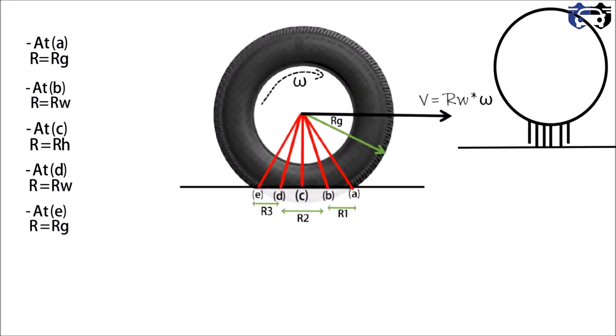For understanding, the tire tread is shown as bristles in the figure. The tail of the tread is on the tire and the head of the tread is on the ground. The tail moves with the velocity of the tire and the head moves with the tangential velocity. When there is a difference between the velocity of the head and tail, the tread will get stretched.